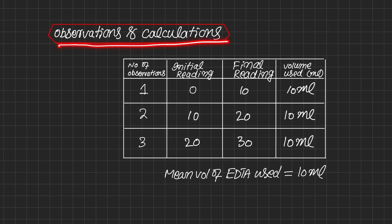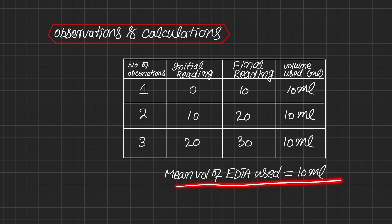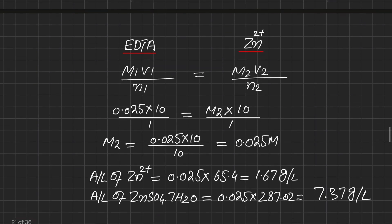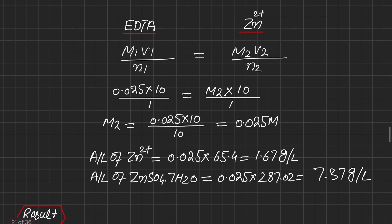For observations and calculations, we take three readings in almost every practical so that we can calculate the mean. The initial reading is zero and the final reading is 10 mL in the first observation; the second observation also reaches 10 mL, and in the third the endpoint is also reached at 10 mL. Therefore the mean volume of EDTA used is 10 mL.